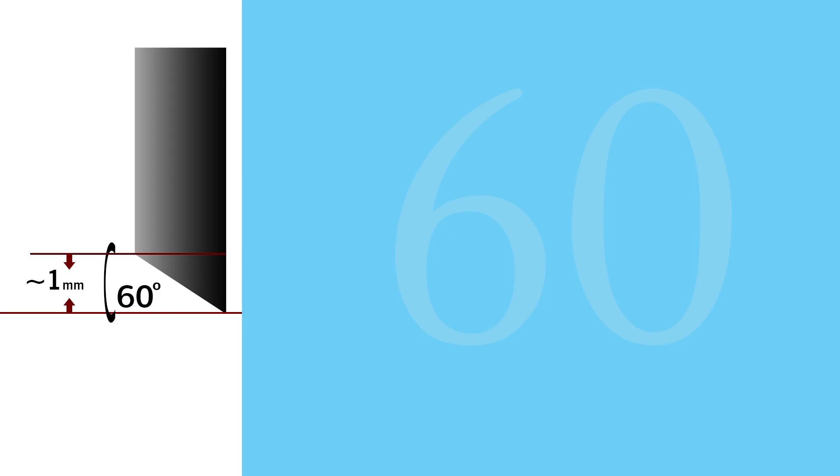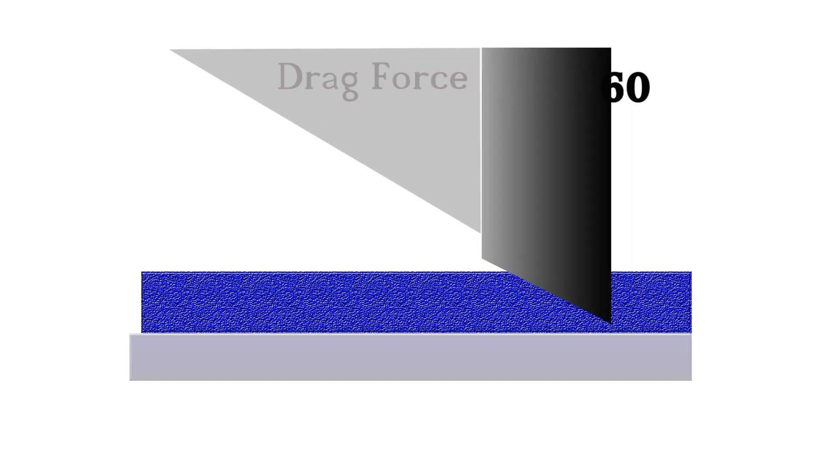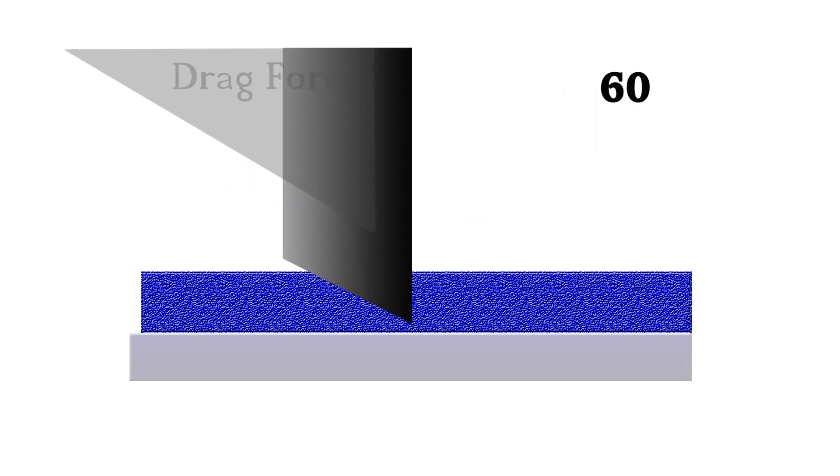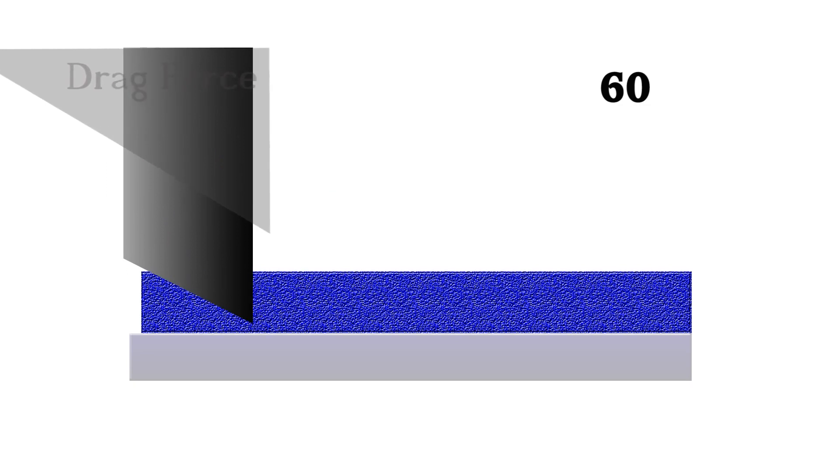60-degree blades are less sharp and have the least effective cutting edge for about 1 millimeter thick material, but they require the least drag force to drag through the material.